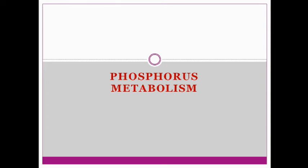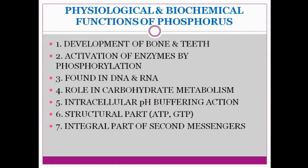Phosphorus metabolism. Functions: phosphorus is an important component of the structural parts of ATP, DNA, RNA and second messengers. Along with calcium, it forms an important constituent of bone. It forms a buffer, balances cations like potassium and magnesium inside the cell, and has a role in carbohydrate metabolism. It is involved in development of bone and teeth, activation of enzymes, and is the structural component of ATP, GTP, and integral part of second messengers.